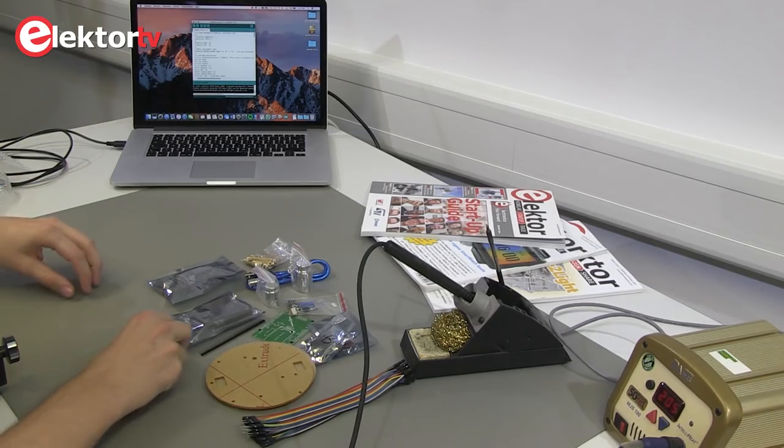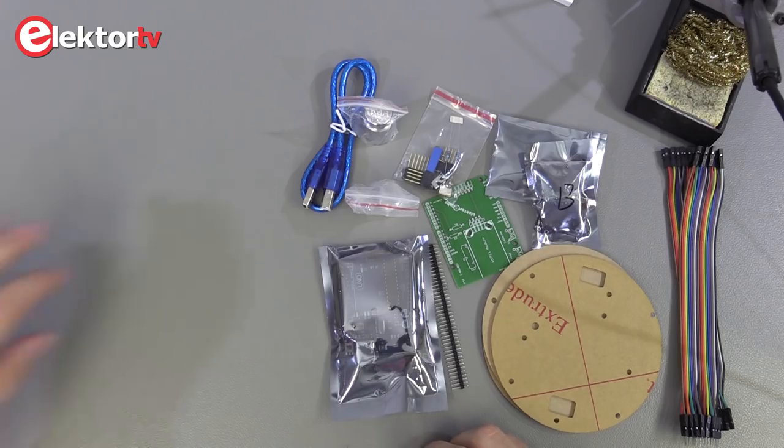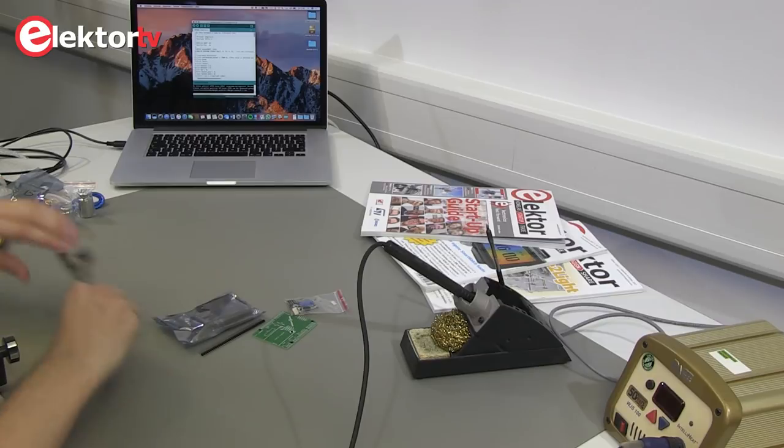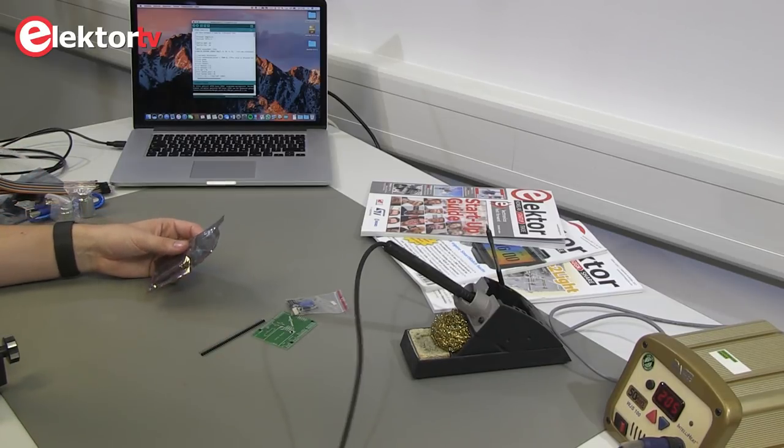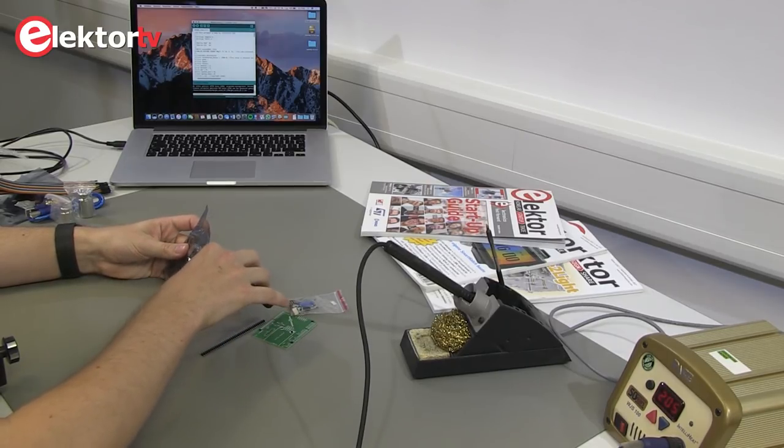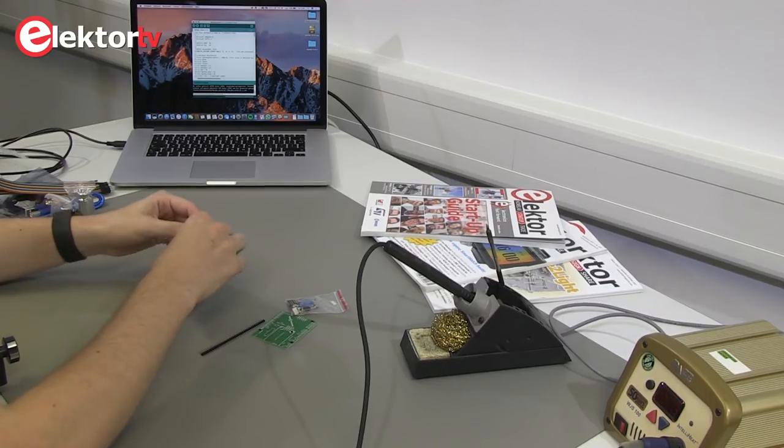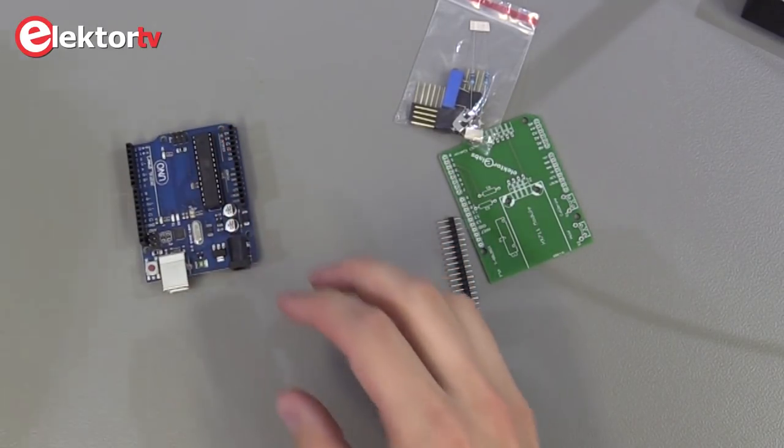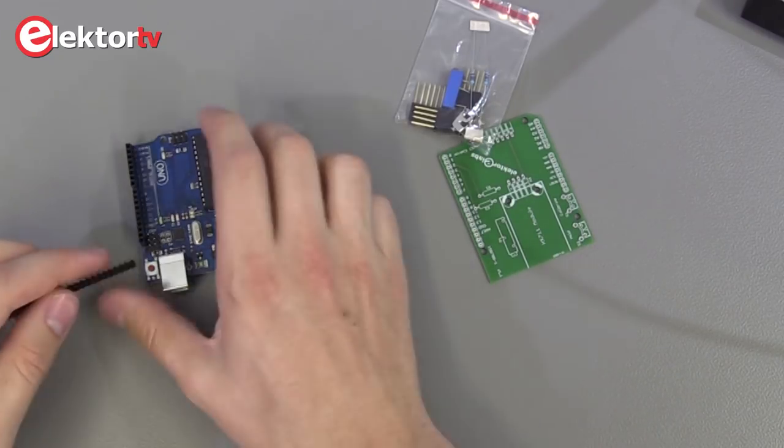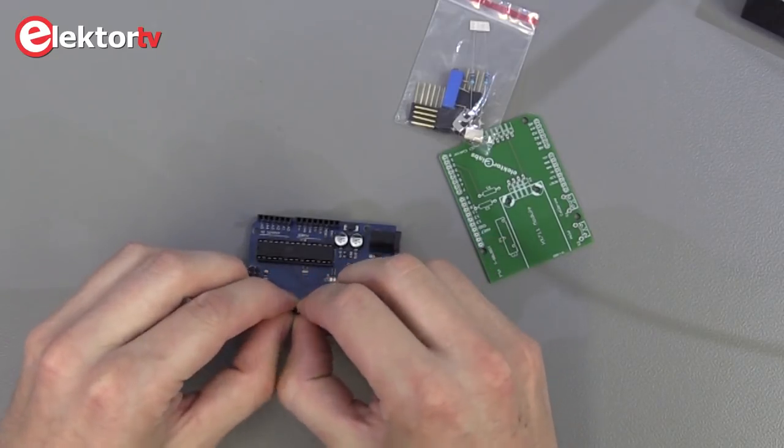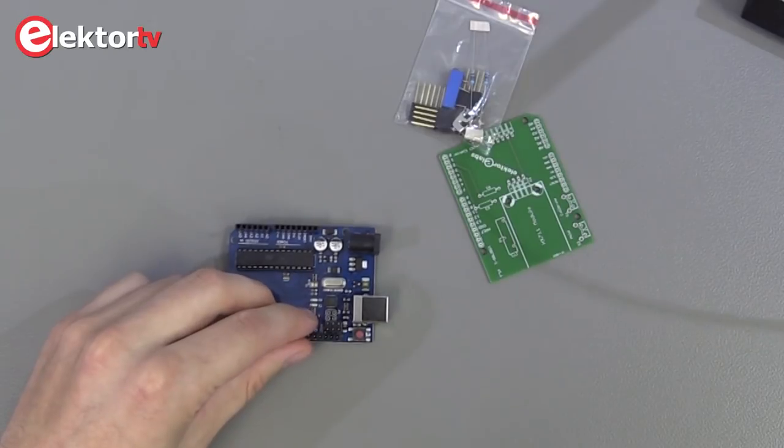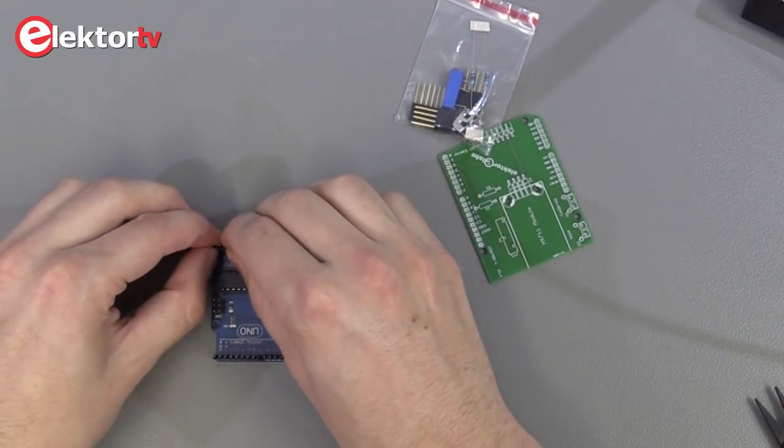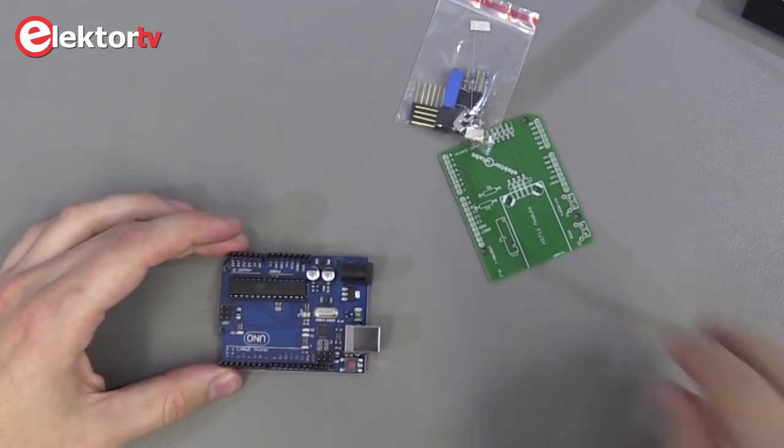Now we solder the components onto the PCB. Let's move aside the items we don't need. First we take the Arduino. I break off the headers to the right size. Then we put the PCB on top.